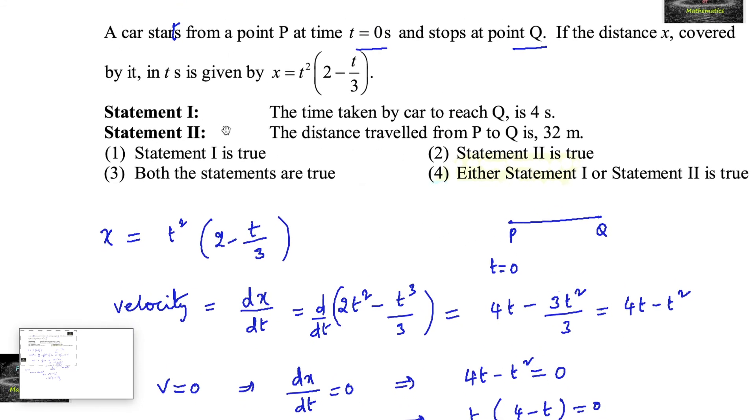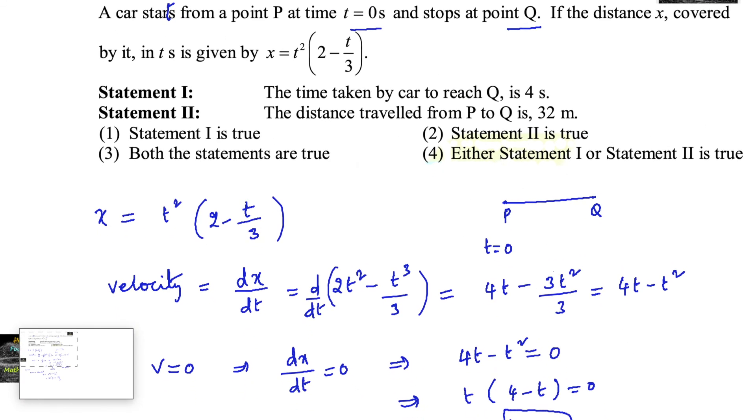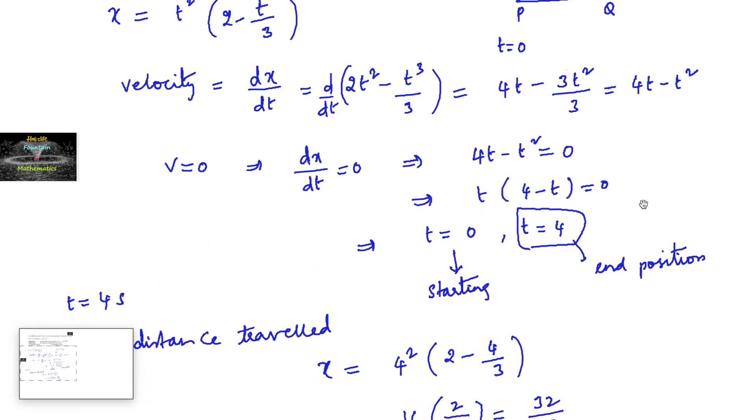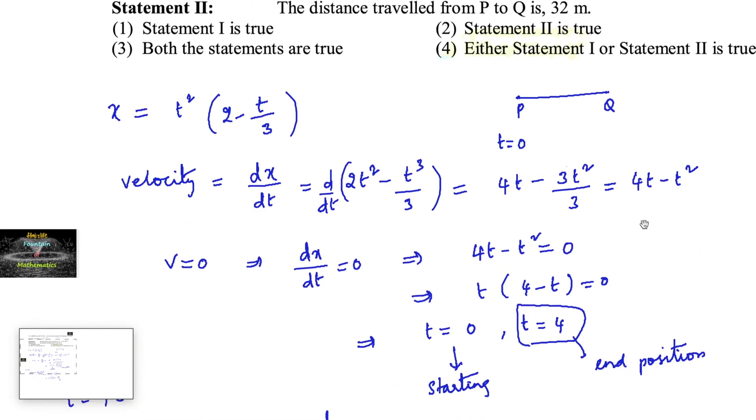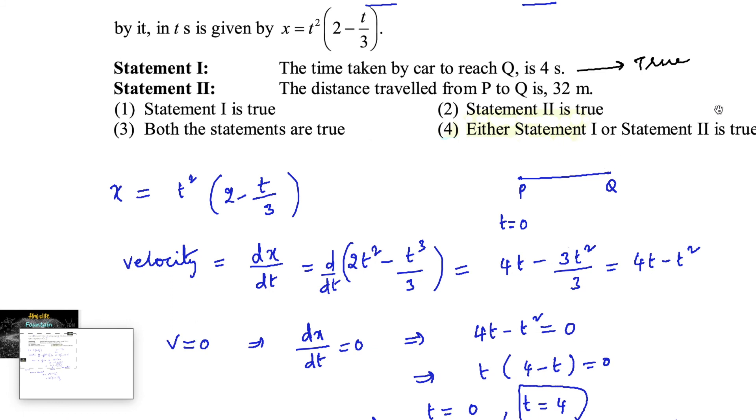So here given statement 1, the time taken by car to reach Q is 4 seconds, which is true. Statement 1 is true. And distance traveled from P to Q is 32 meters, but here we got 32 upon 3 meters, which is not correct, so statement 2 is false.